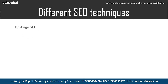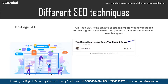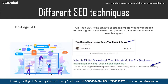On-page SEO is the practice of optimizing individual web pages to rank higher on the SERPs and get more relevant traffic from search engines. As the name suggests, it optimizes the content present on the page — including title tags, meta tags, meta description, keyword density, URL of the page, and so on. These are strategies to gain more traffic by focusing on the content on the page.